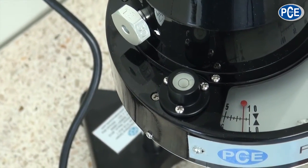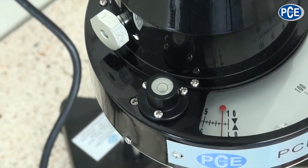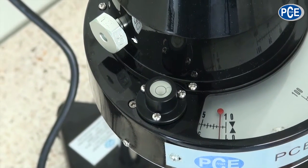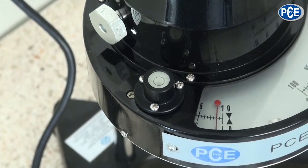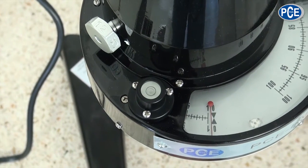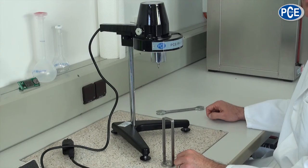The viscometer is now fixed to the standing pole and now we have to level it with the help of the screwable feet and with the help of the spirit level. As you can see the viscometer is set leveled properly, you can see it on the spirit level.